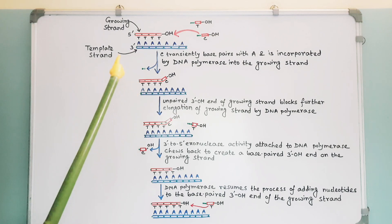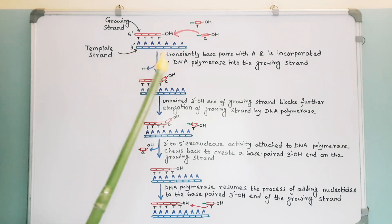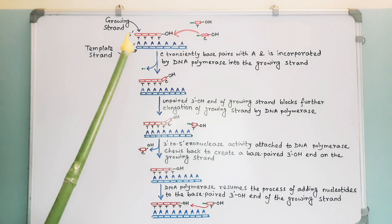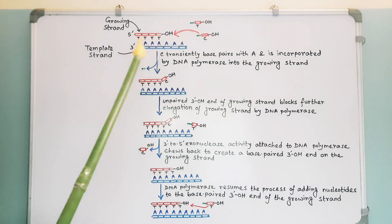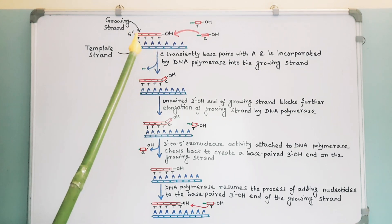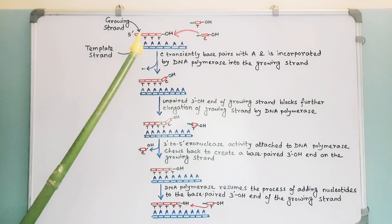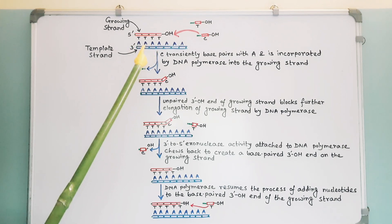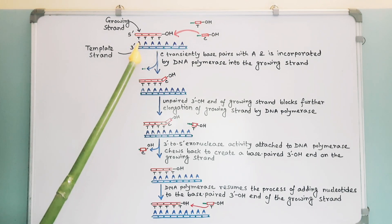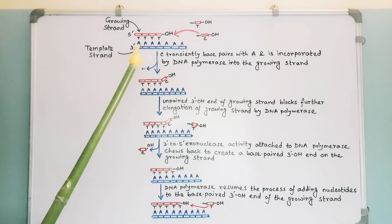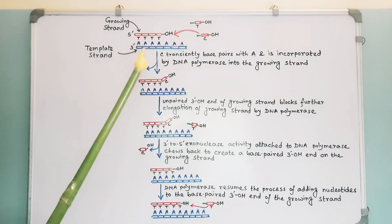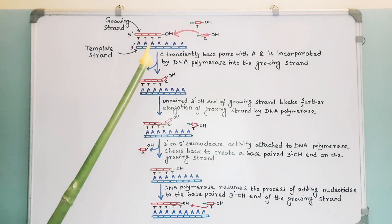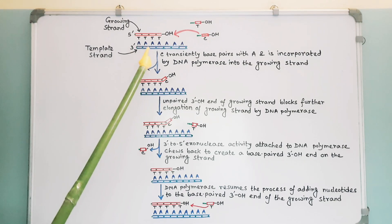This is the template strand and this is the newly synthesized strand, or the growing strand. We all know thymine pairs with adenine, so DNA polymerase adds thymine against adenine.